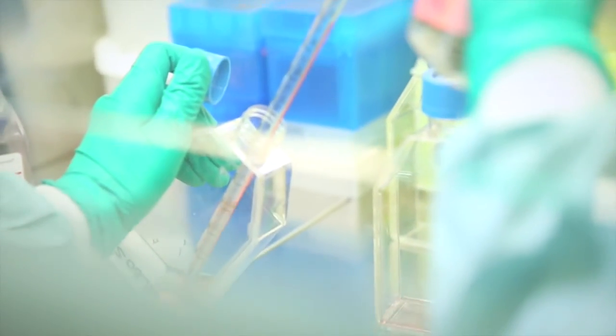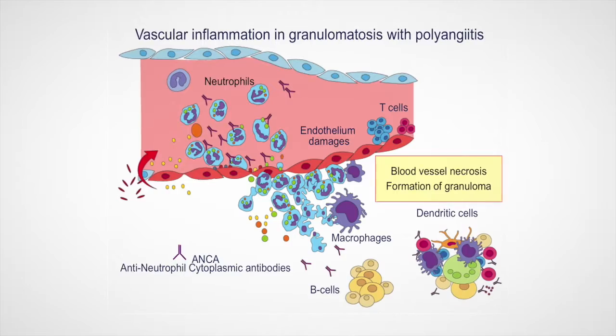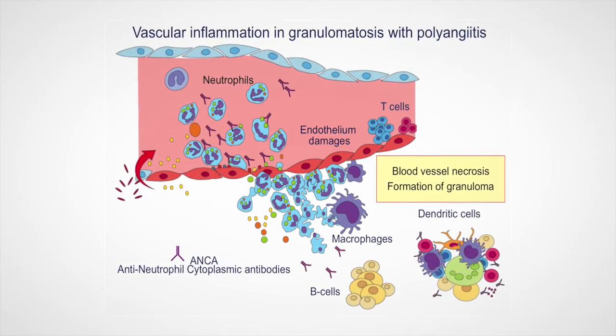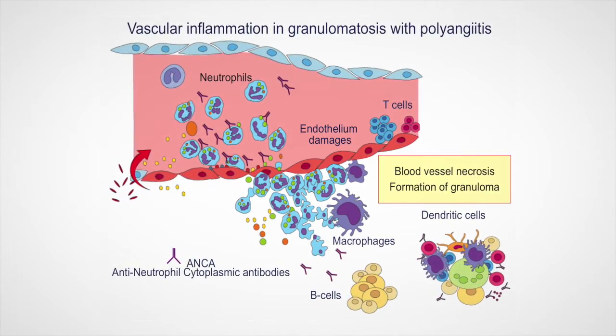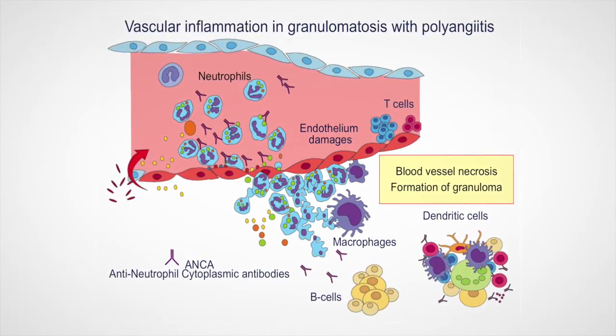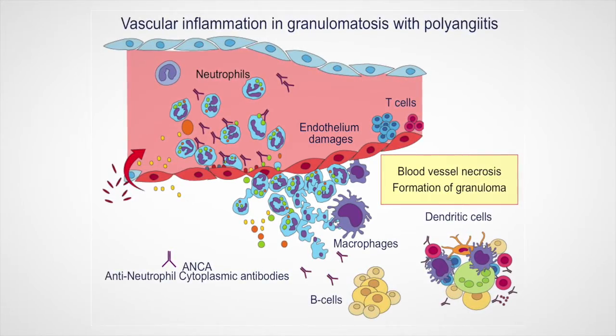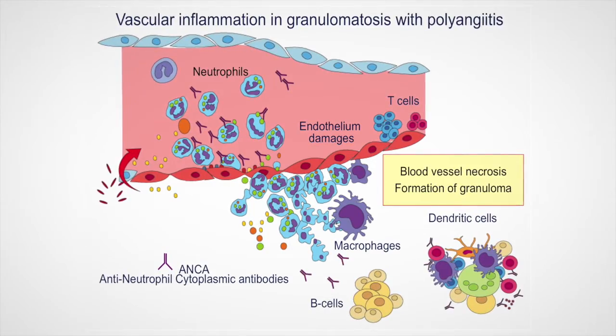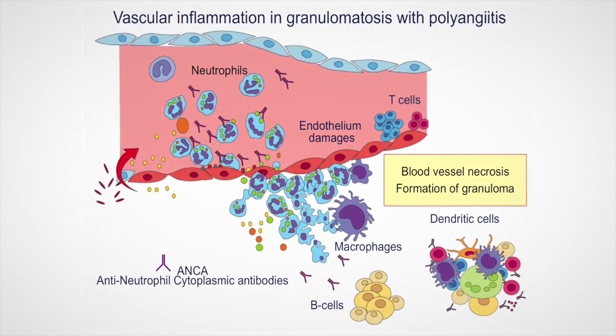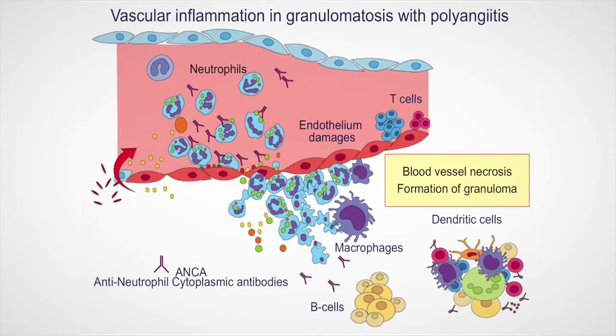My laboratory is focused on the biology of neutrophils in inflammatory disease. Neutrophils are key players in autoimmune vasculitis, characterized by the presence of an autoantibody called ANCA directed against neutrophil proteins. One particular form of vasculitis our lab is interested in is granulomatosis with polyangiitis, which is a severe disease involving vascular inflammation, blood cell necrosis, and the formation of granulomas in various organs like lung and kidney.